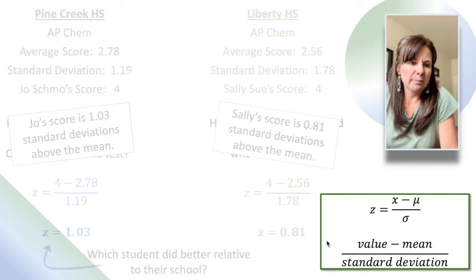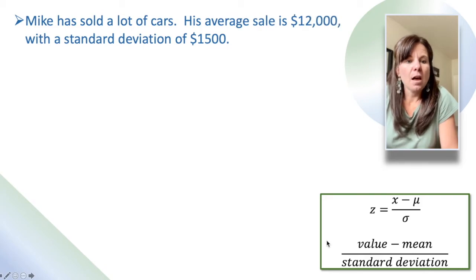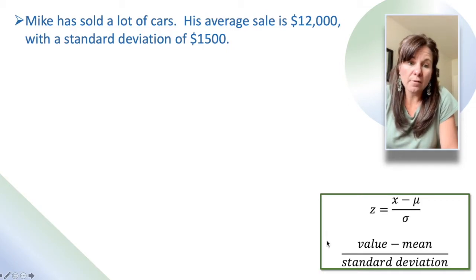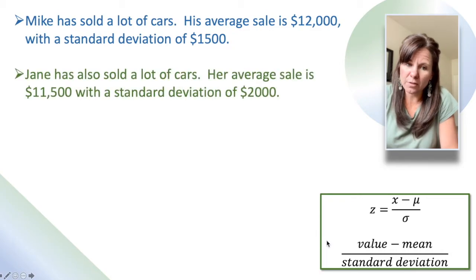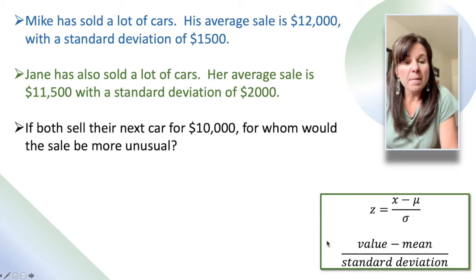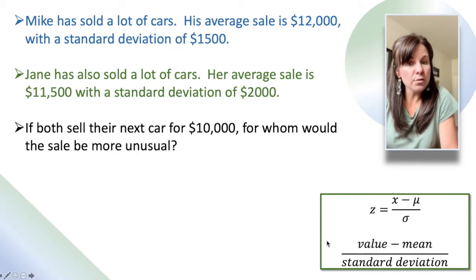Let's try another example. Mike is a car salesman and he has sold a lot of cars. His average sale is $12,000 with a standard deviation of $1,500. Jane has also sold a lot of cars. Her average sale is $11,500 with a standard deviation of $2,000. If they both sell their next car for $10,000, for whom would the sale be more unusual?